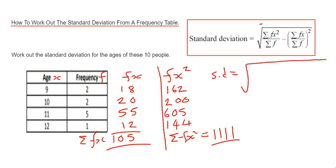We've got sigma fx squared, which is 1111, divided by sigma f, which is 10. Then in brackets, we subtract sigma fx, that's 105, divided by sigma f again, which is 10, and we square that bracket. You should now be able to type this exactly as it appears on your scientific calculator using the fraction button and bracket keys.